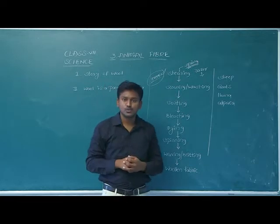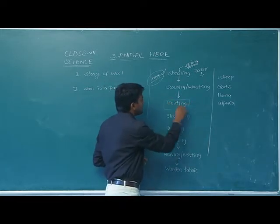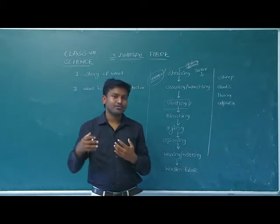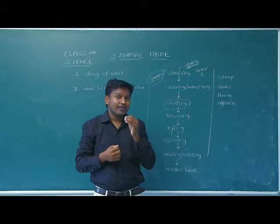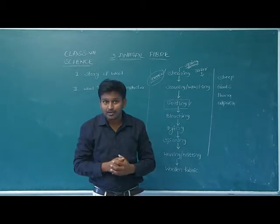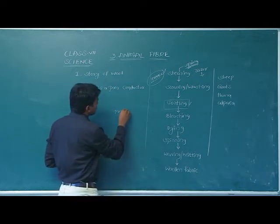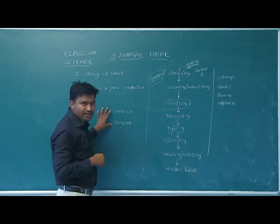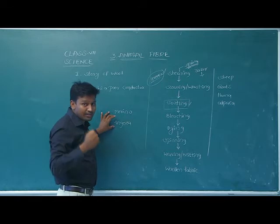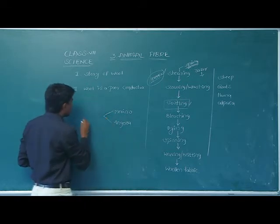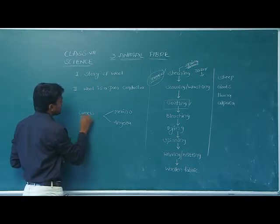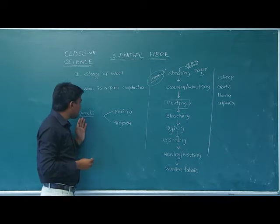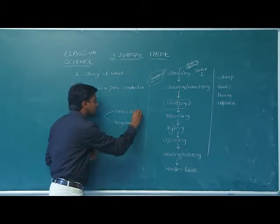After washing, the next process is sorting. Sorting means separating. Why do we need to separate? Because every sheep does not have the same quality of fiber. For example, if you observe merino sheep and angora goat, these two have very soft and smooth hair, so the fiber from merino and angora is very expensive. But if you observe other animals like camels, their hair is very coarse and rough.